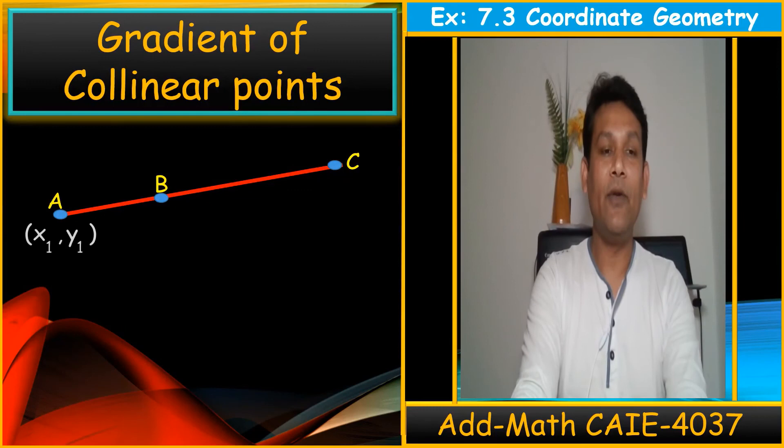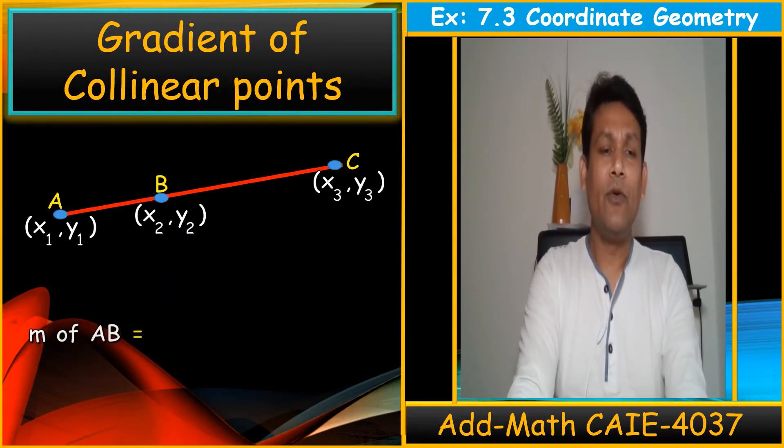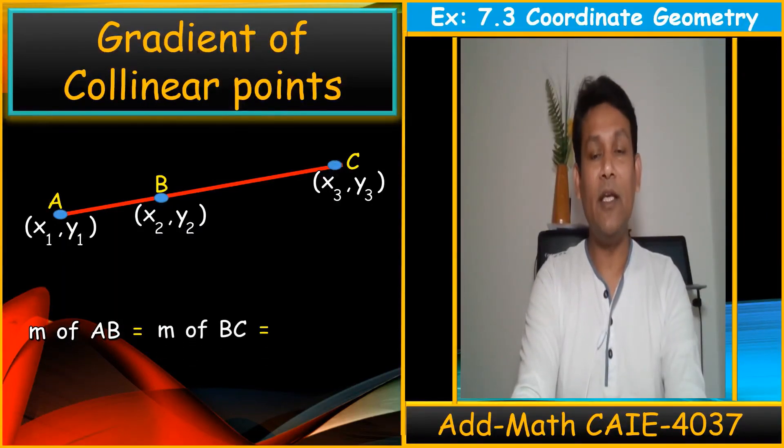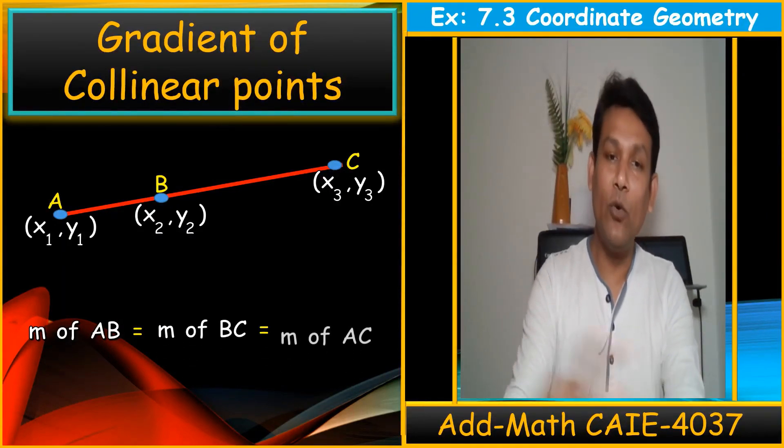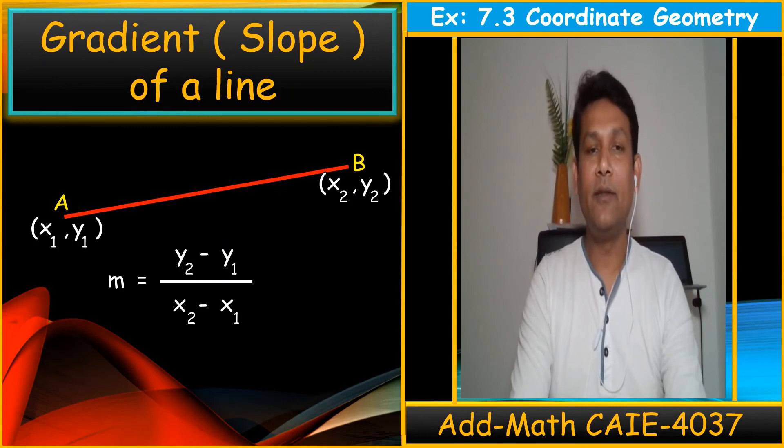When we need to find the gradient, the coordinates are given. Gradient of AB is always equals to gradient of BC, which equals to gradient of the whole line AC. So we have only done. That's how we can use the formula in exercise 7.3.